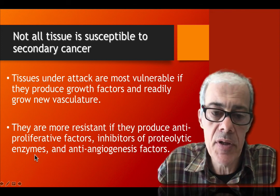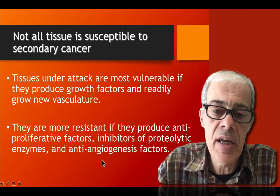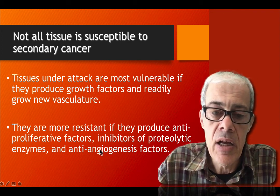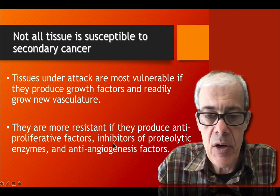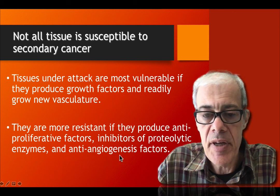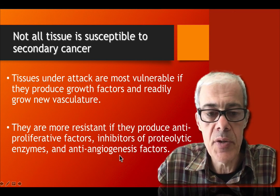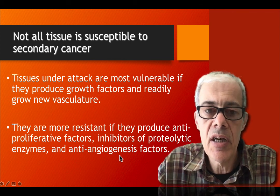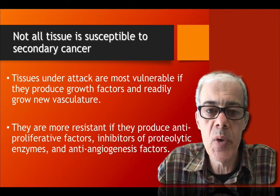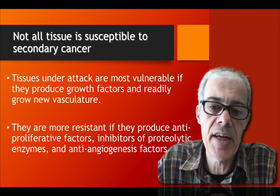Some tissues are more resistant because they produce anti-proliferation factors — other genes are expressed that inhibit the growth of new cells, inhibit proteolytic enzymes that allow invading cells to enter, and limit the blood supply to new cells. So some tissues are more resistant and some are more susceptible to secondary cancers.